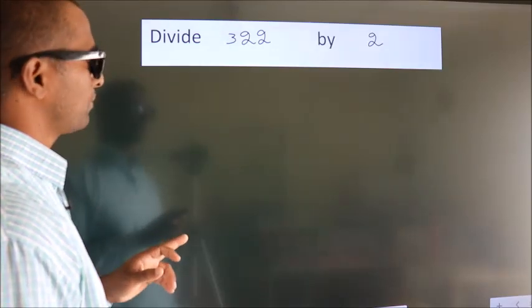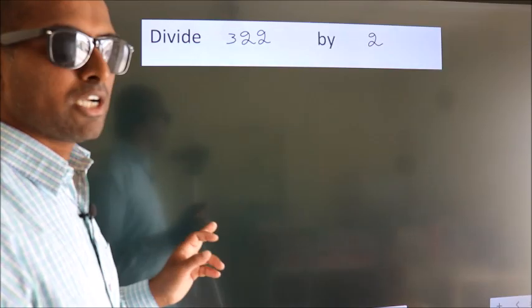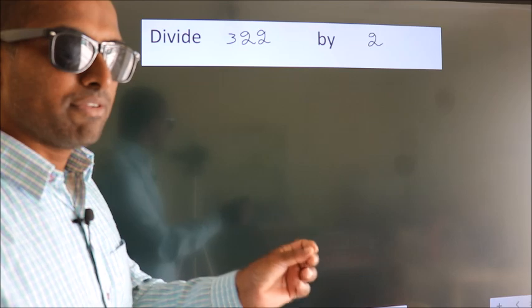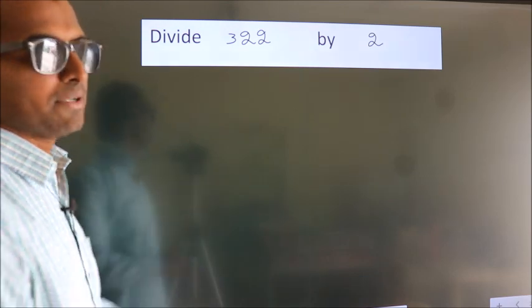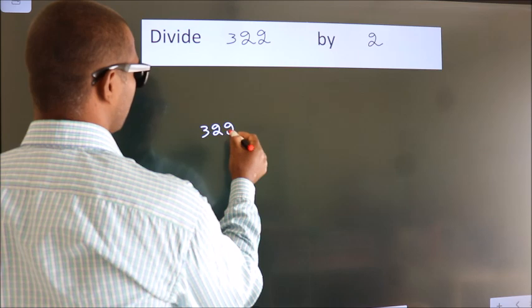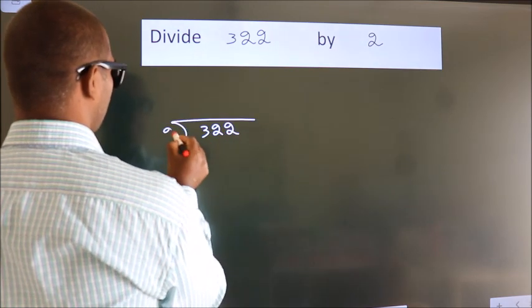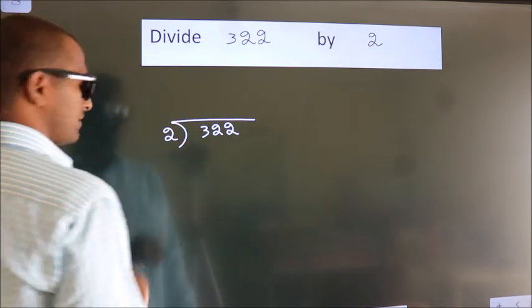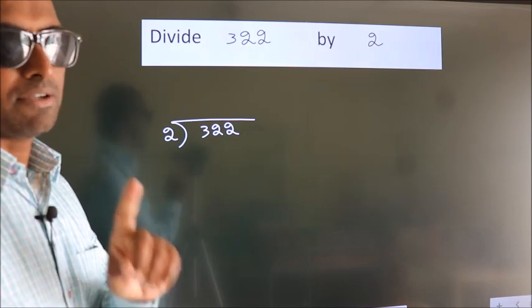Divide 322 by 2. To do this division, we should frame it in this way. 322 here, 2 here. This is your step 1.